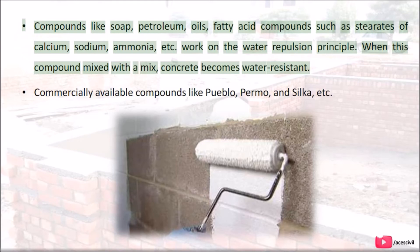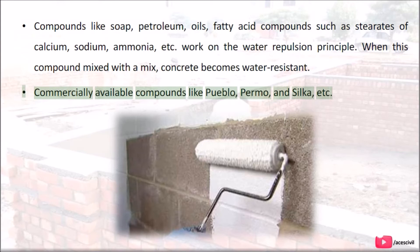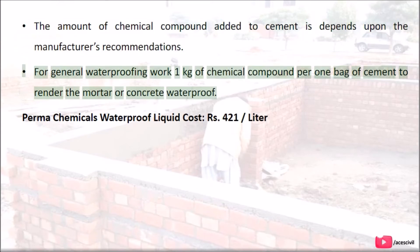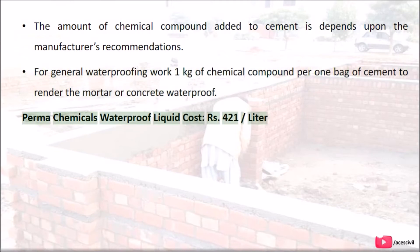Compounds like soap, petroleum, oils, and fatty acid compounds such as stearates of calcium, sodium, and ammonia work on the water repulsion principle — when mixed into the concrete mix, the concrete becomes water resistant. Commercially available compounds like Permo and silica are also used. The amount of chemical compound added to cement depends upon the manufacturer's recommendations. For general waterproofing work, 1 kilogram of chemical compound per 1 bag of cement is used to render the mortar or concrete waterproof. Perma chemical waterproof liquid costs approximately 421 per liter.